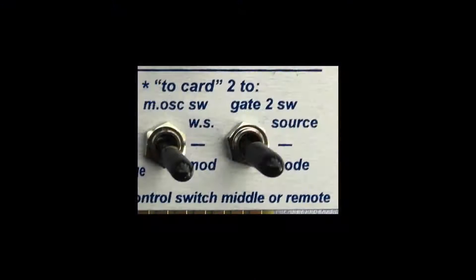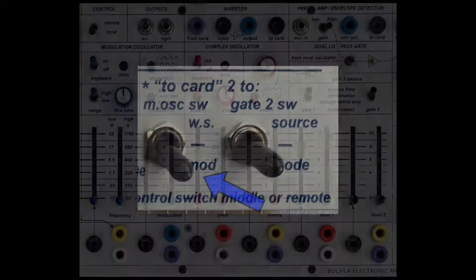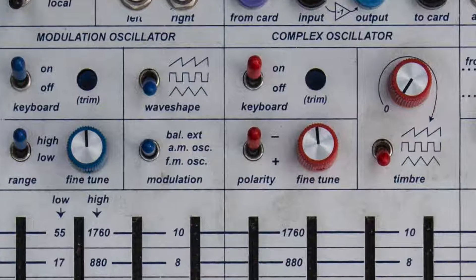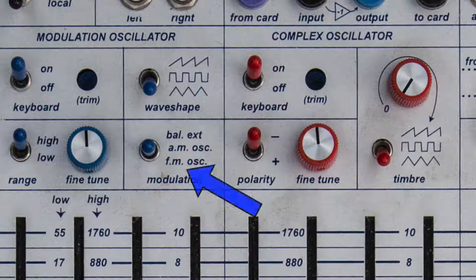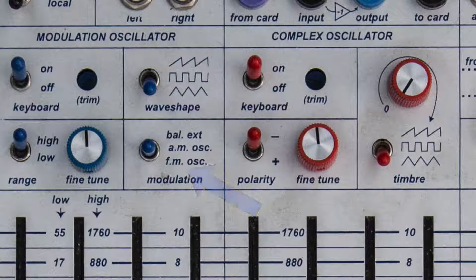Switch number one in the lower position affects the modulation type. The modulation switch on your easel needs to be in the low FM oscillator position in order to scroll through all three positions.